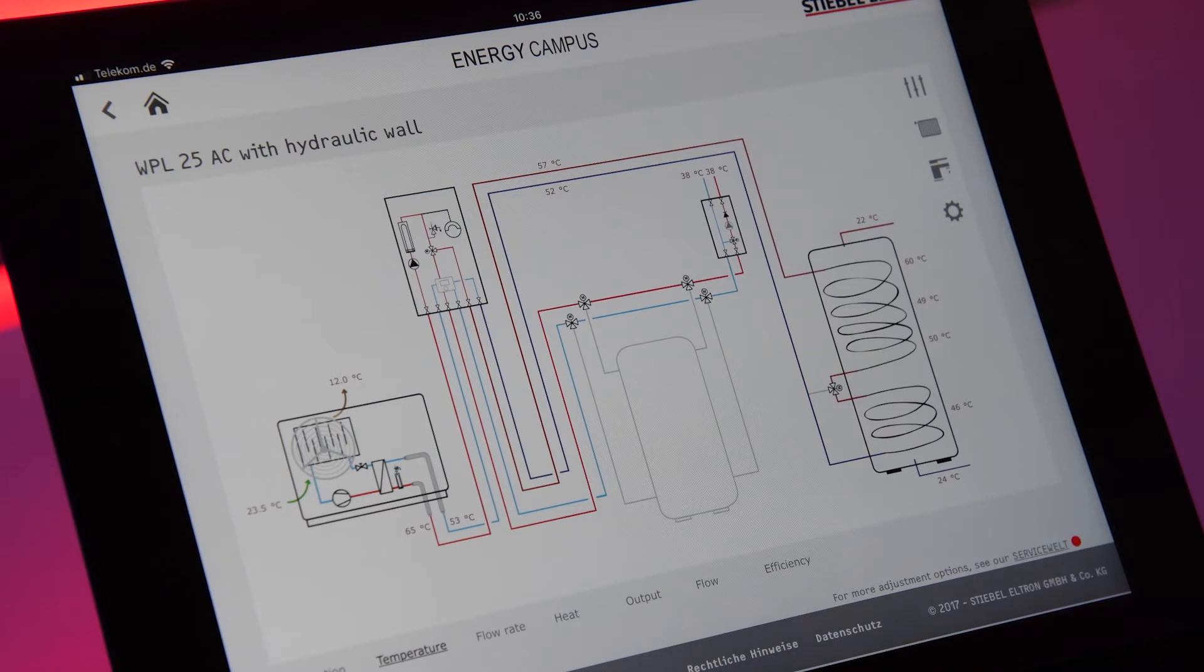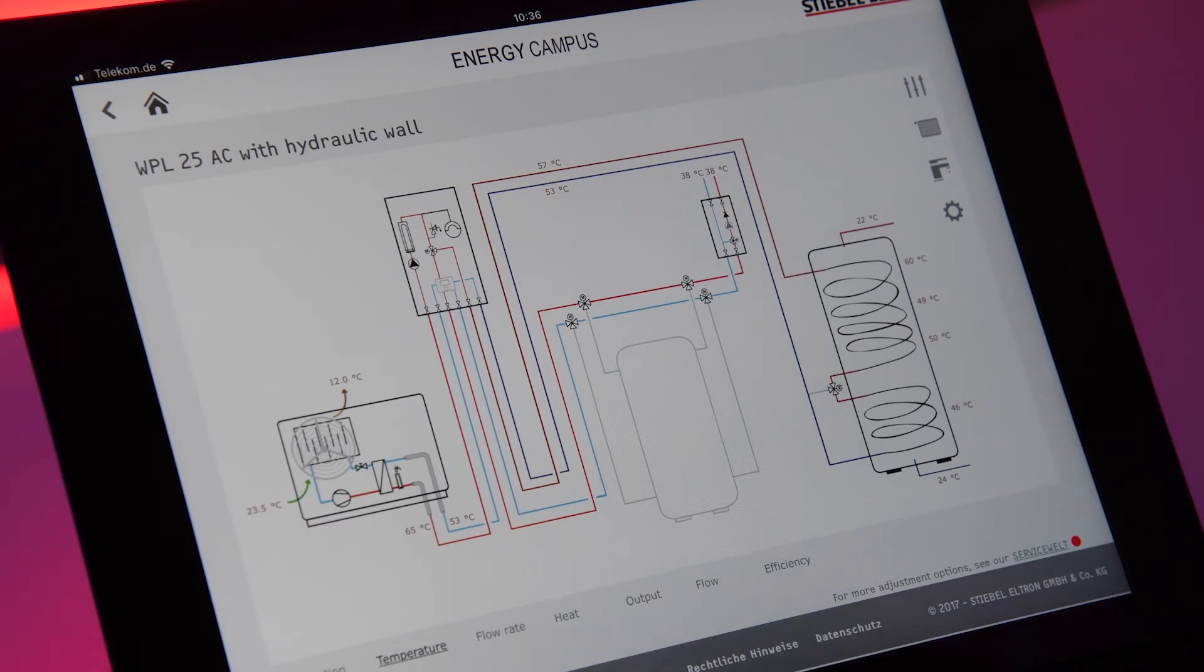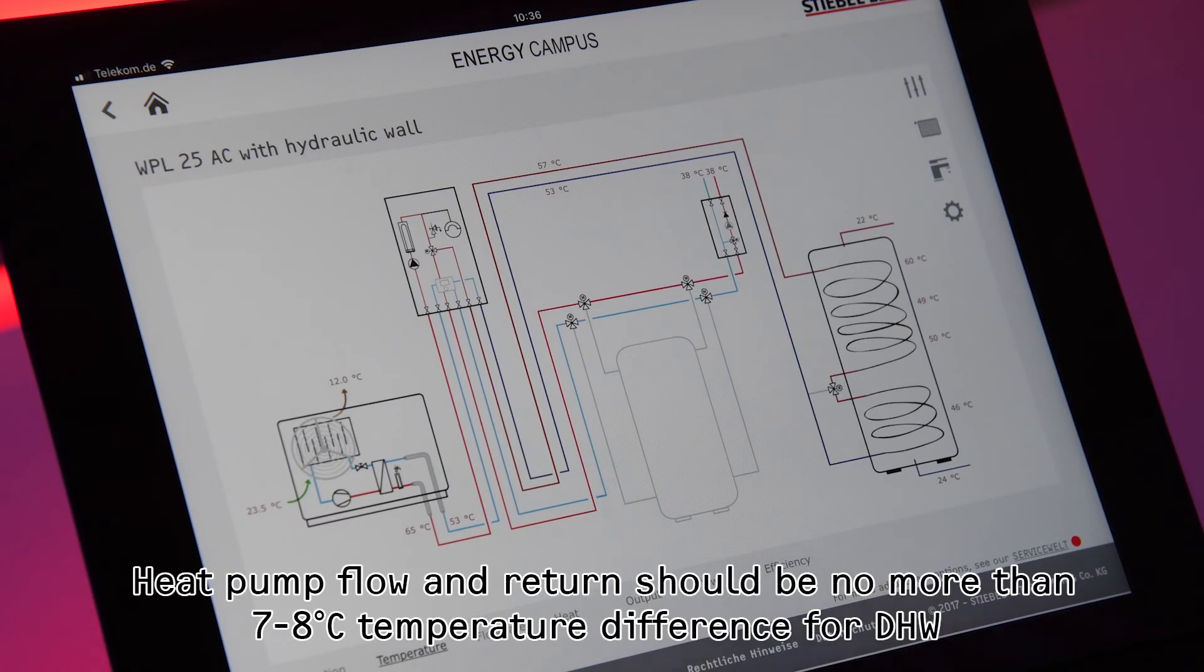12 Kelvin delta T on the heat pump is from the beginning already too much. So usually we will try to work with 5 to 7, in domestic hot water maybe 7 to 8, but that should be the maximum.